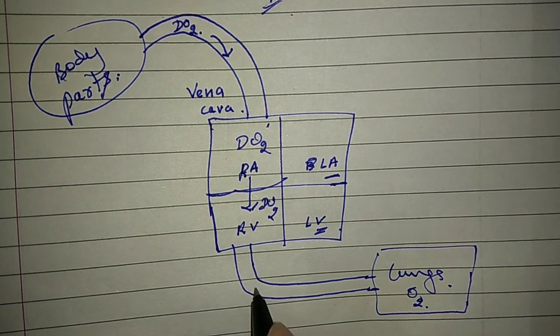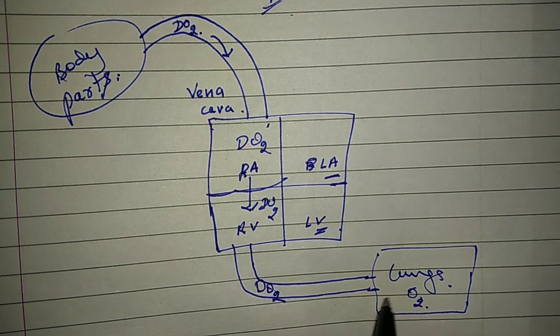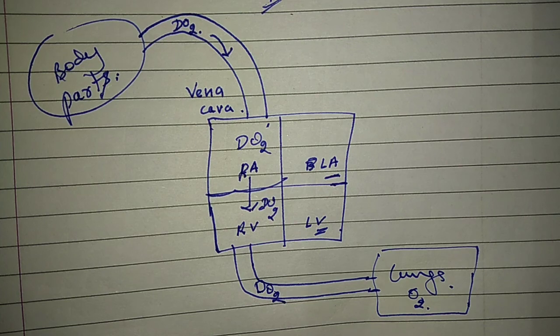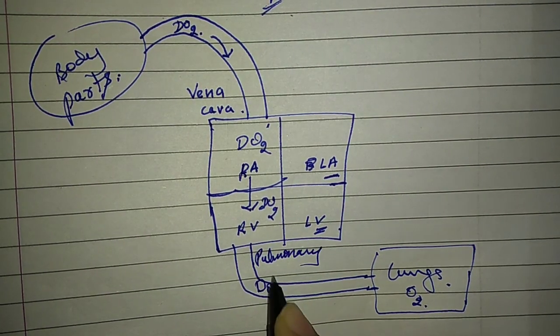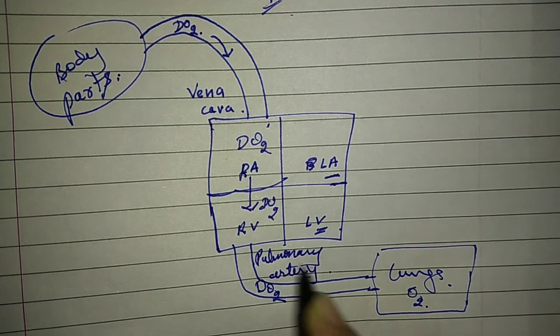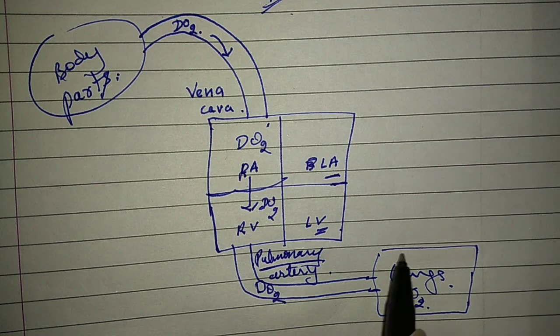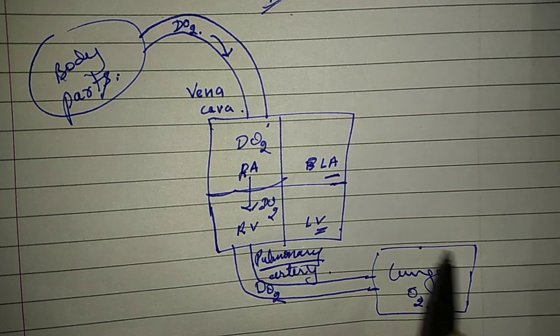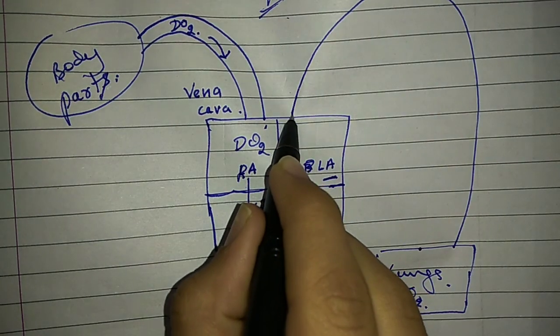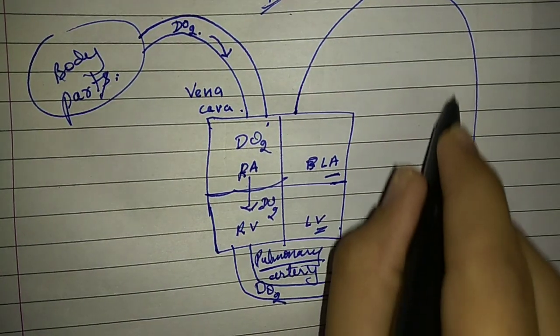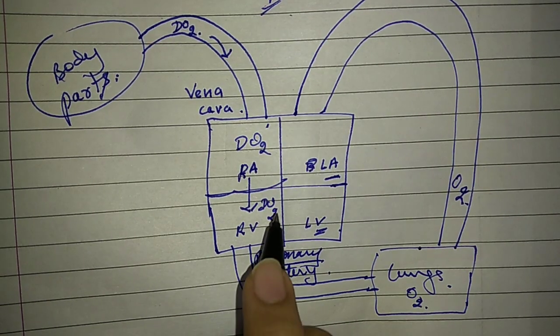From the right ventricle, deoxygenated blood is then transferred to the lungs. In the lungs, the blood becomes oxygenated, and then this oxygenated blood comes to the left atrium.